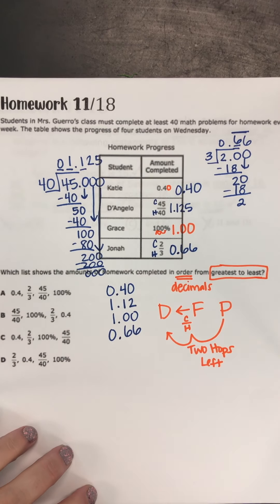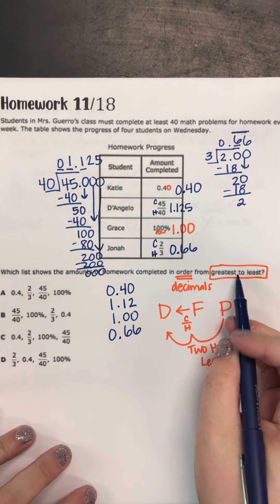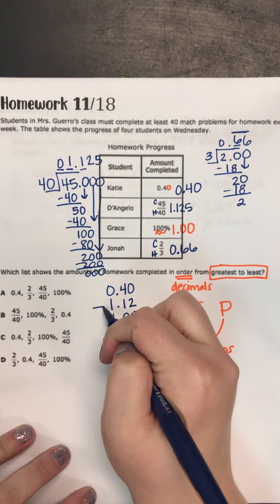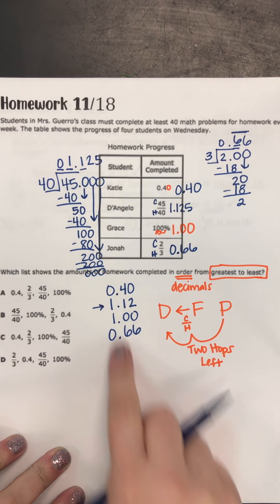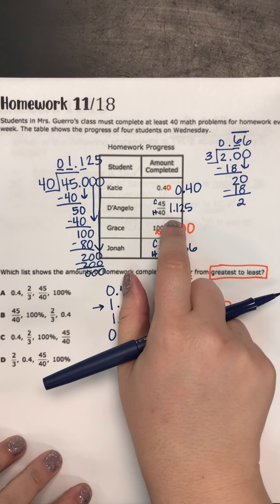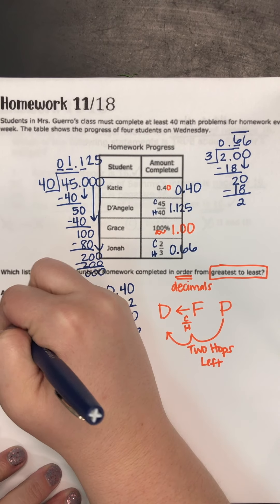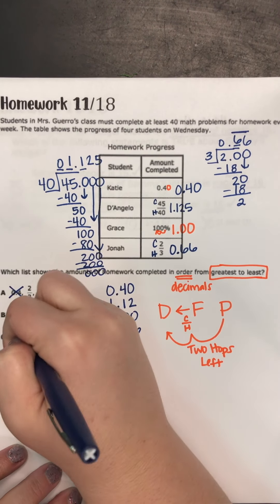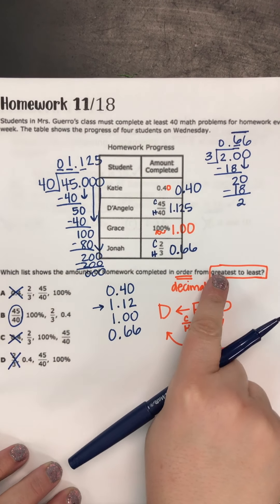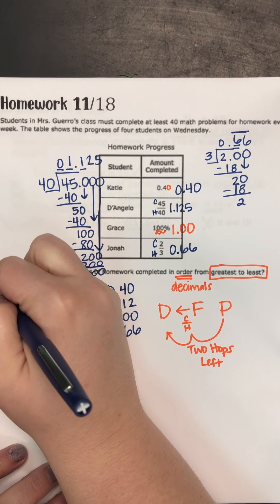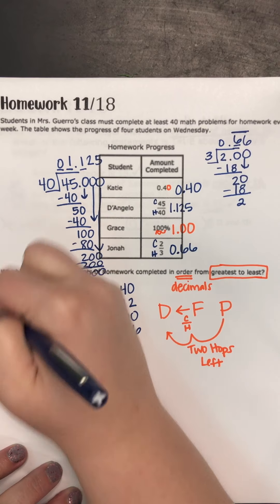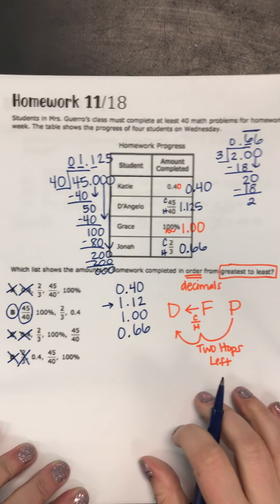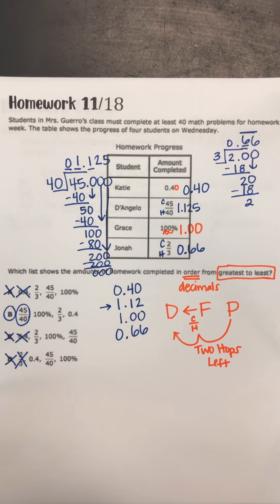So looking at all of this like money, which is the greatest amount of money? It looks like that's going to be the 1.12, which would be D'Angelo, 45 over 40. So looking at my answer choices, the only one that starts with the greatest number will be the letter B. Letter B. And that's how you solve that problem.